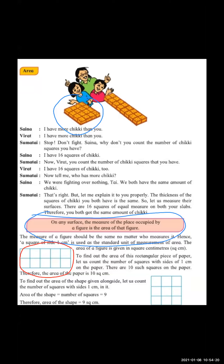Let us count the number of squares with sides of one centimeter. I already told you, we want to assume and measure — it is a one-centimeter box. Now the formula is given to you on the downside: the area of the shape is equal to one formula.